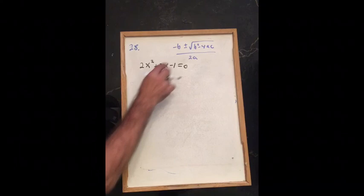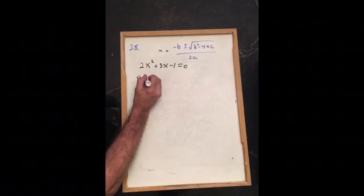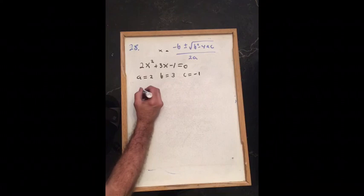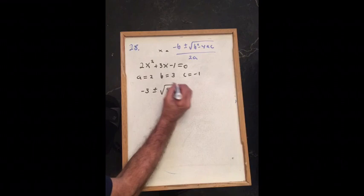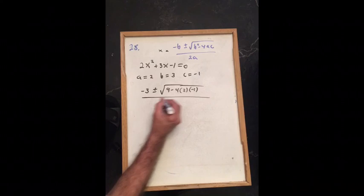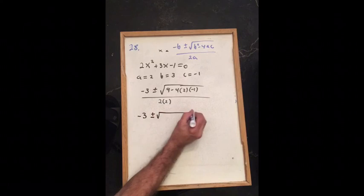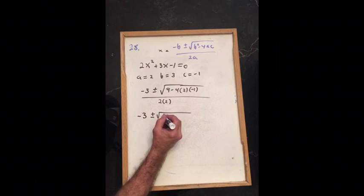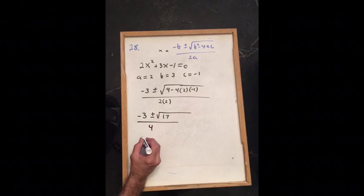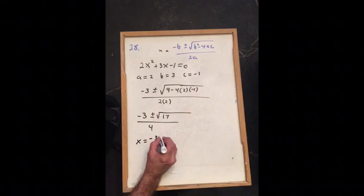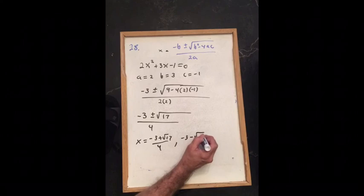For problem 28, we use the quadratic formula where x equals negative b plus or minus root of (b squared minus 4ac) over 2a. With a equals 2, b equals 3, c equals negative 1: negative b is negative 3, b squared is 9, and negative 4 times 2 times (−1) is plus 8, giving root of 17. So x equals negative 3 plus or minus root 17, all over 4. The solution set is (negative 3 plus root 17 over 4, negative 3 minus root 17 over 4).